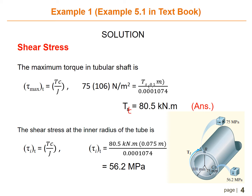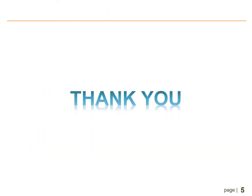Finally, we find the shear stress at the inner radius of the tube using tau_i equals T times ci over J. Substituting T equals 18.5 kilonewton meters, ci equals 0.075 meters, and J equals 0.0001074, we get the shear stress at the inner radius of the tube equals 56.2 megapascal. That's all for example number one. Thank you so much, assalamualaikum.